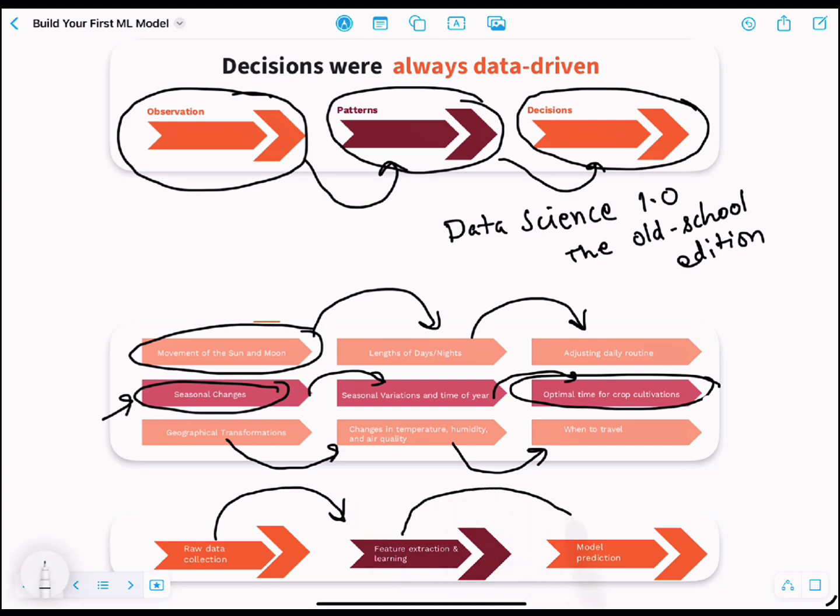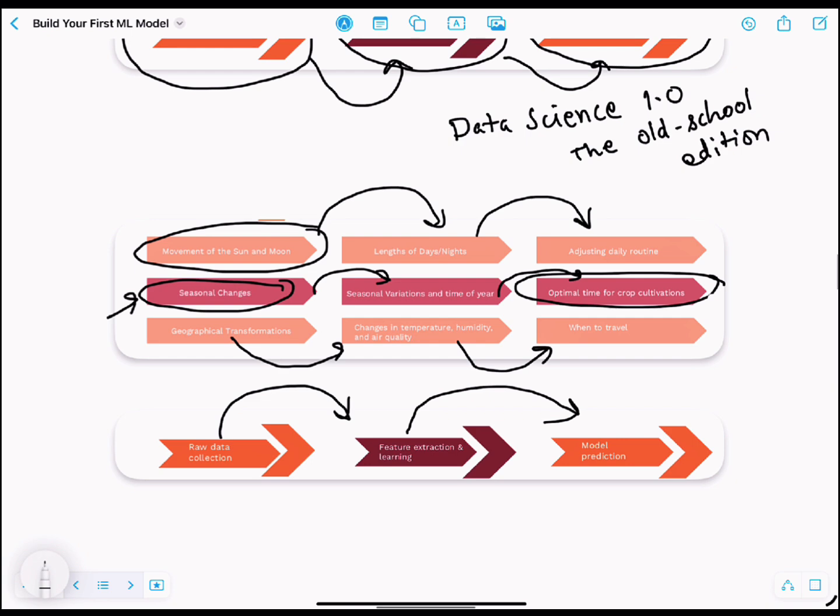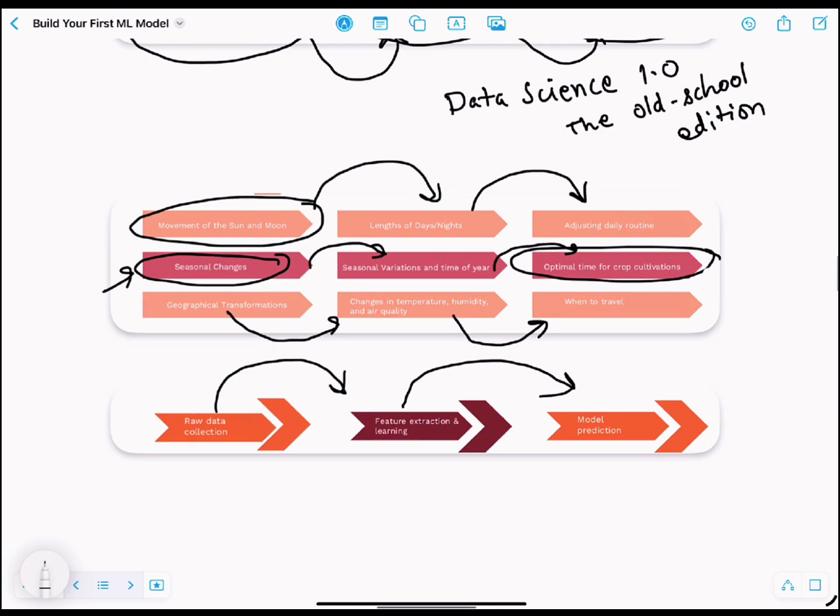So basically, ancient humans were doing raw data collection through observations, feature extraction and pattern recognition in their minds, and prediction in their everyday decisions. Yeah, your grandma was doing machine learning, just without Python. What's changed now is that we can make accurate predictions with the advanced tools at our disposal, so the accuracy has increased.